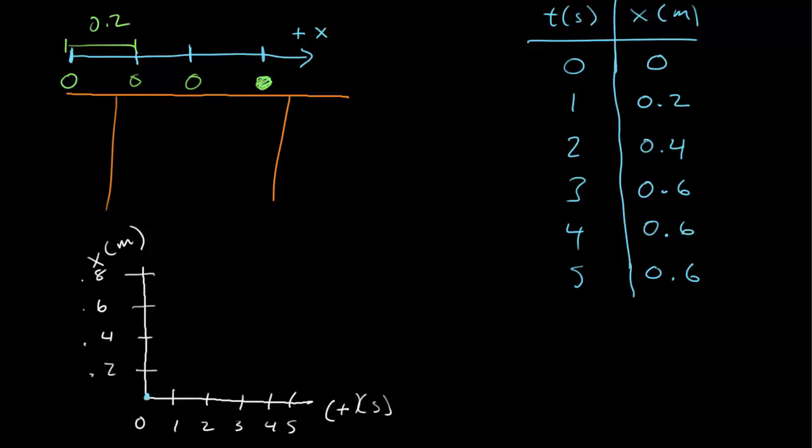At zero, it's at zero. Then one, it's at 0.2. Two, it's at 0.4. Three, at 0.6. Four, 0.6, and five, 0.6. This should be a straight line through there, at which point it stops, which gives me a horizontal line. So that's it. I have a table given that coordinate system, and I have a graph of that data.